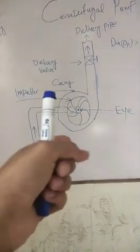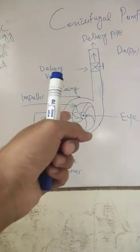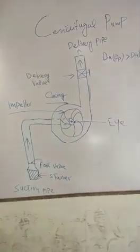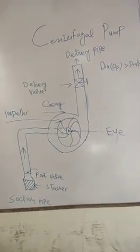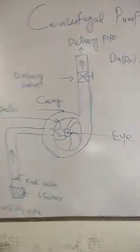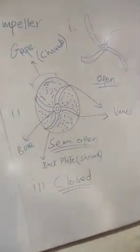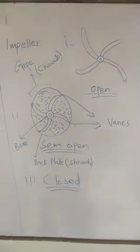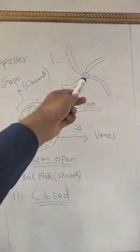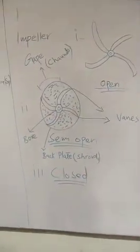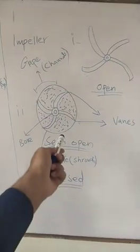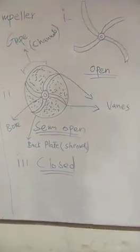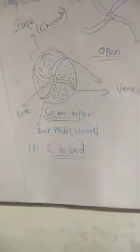The impeller and casing are key components. Before we discuss the impeller further, note that there are three types of impellers: one is open, the second is semi-open, and the third is closed.